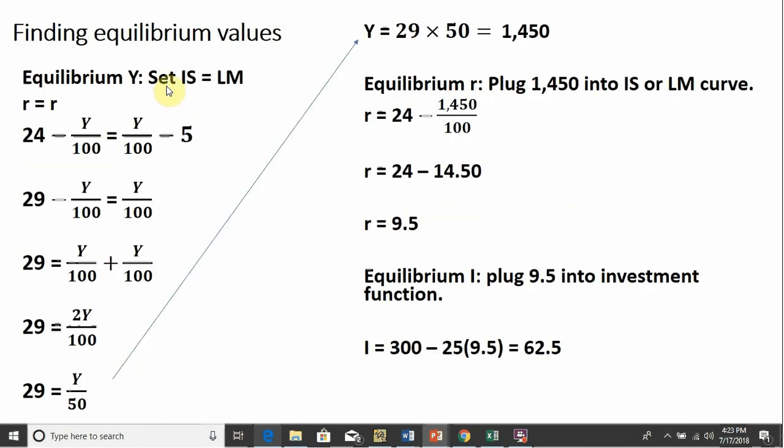So to do that, we're just going to set the IS curve equal to the LM curve. So essentially, we're setting R equal to R. So doing that, we got the IS curve on the left-hand side, and that's set equal to the LM curve on the right-hand side.